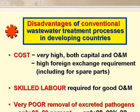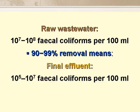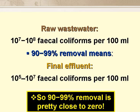In developing countries, conventional wastewater treatment processes such as activated sludge have several major disadvantages. The first is cost — their costs are always very high, with a high requirement for foreign exchange. Secondly, to operate and maintain them properly requires skilled labour that would be better employed in local manufacturing industries. And thirdly, they only achieve a 90 to 99% removal of excreted pathogens. A 90 to 99% removal of BOD would be excellent, but for faecal coliforms it's actually rather poor. Because raw wastewater contains between 10⁷ and 10⁸ faecal coliforms per 100 ml, a removal of 90 to 99% means that the final effluent would contain somewhere between 10⁵ and 10⁷ faecal coliforms per 100 ml — so a 90 to 99% removal of excreted bacteria is pretty close to zero.